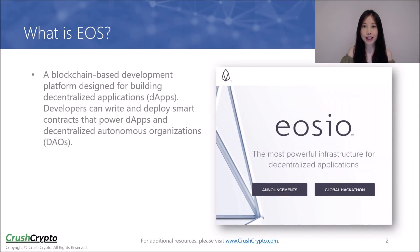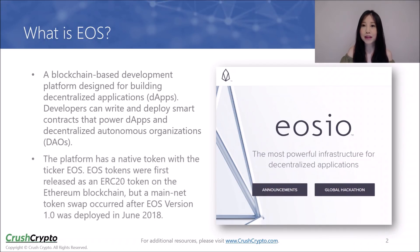With EOS, developers can write and deploy smart contracts that power decentralized applications and decentralized autonomous organizations. EOS currently has a market cap of over 1.8 billion dollars and ranks among the top 10 cryptocurrencies in the world. The platform's native token has a ticker symbol EOS. EOS tokens were first released as an ERC20 token on the Ethereum blockchain, but a mainnet token swap occurred after EOS version 1.0 was deployed in June of this year.